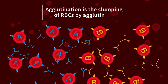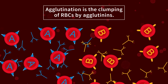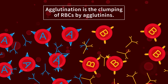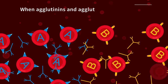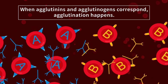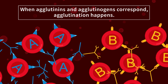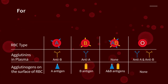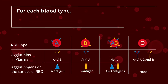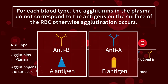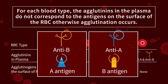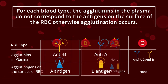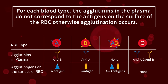Agglutination is the clumping of RBCs by agglutinins. When agglutinins and agglutinogens correspond, agglutination happens. For each blood type, the agglutinins in the plasma do not correspond to the antigens on the surface of the RBC. Otherwise, agglutination occurs.